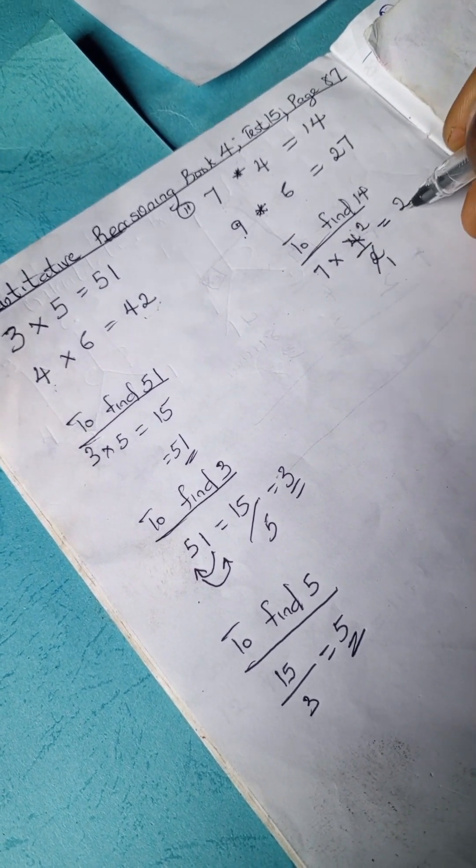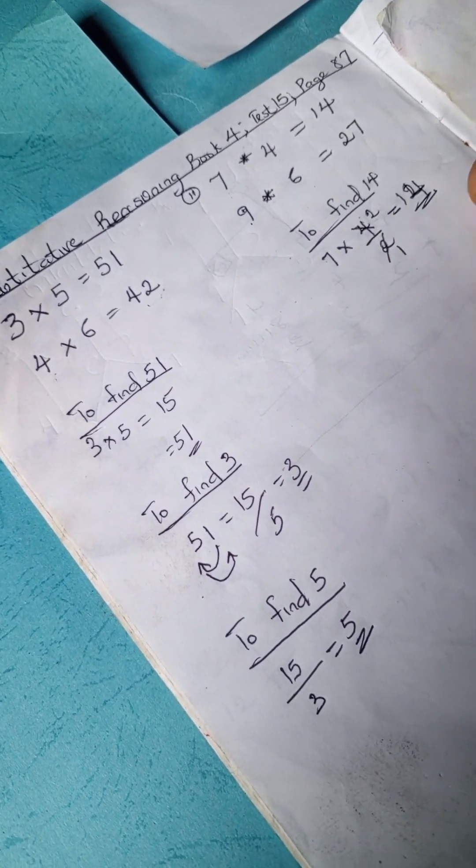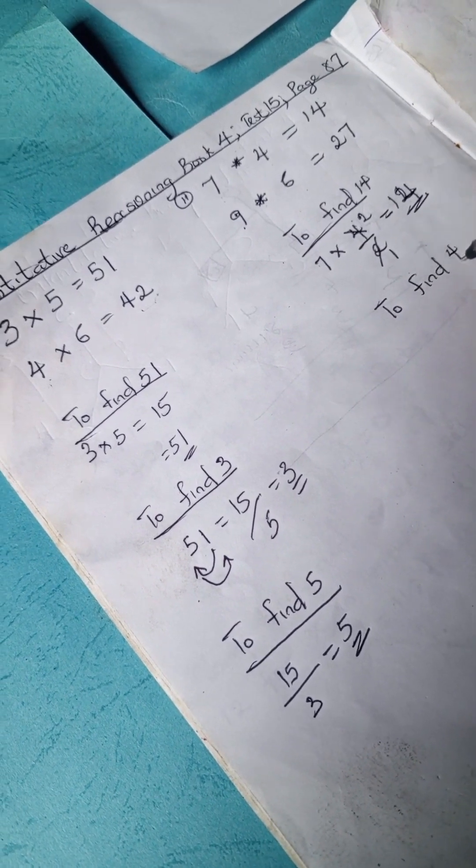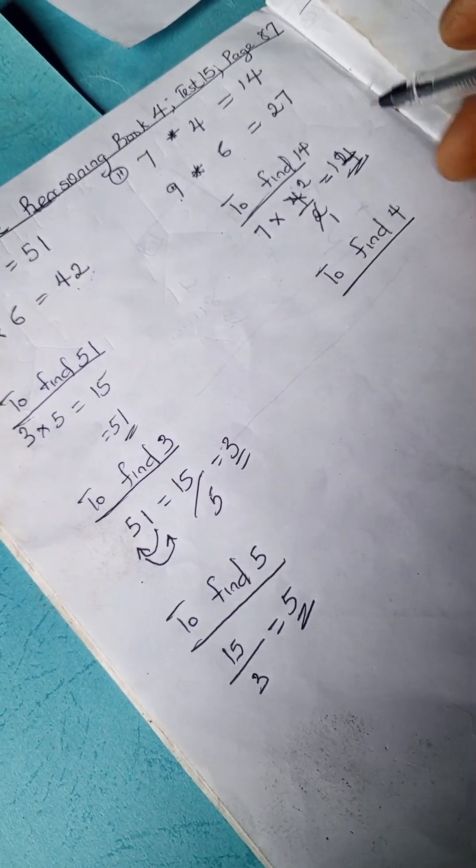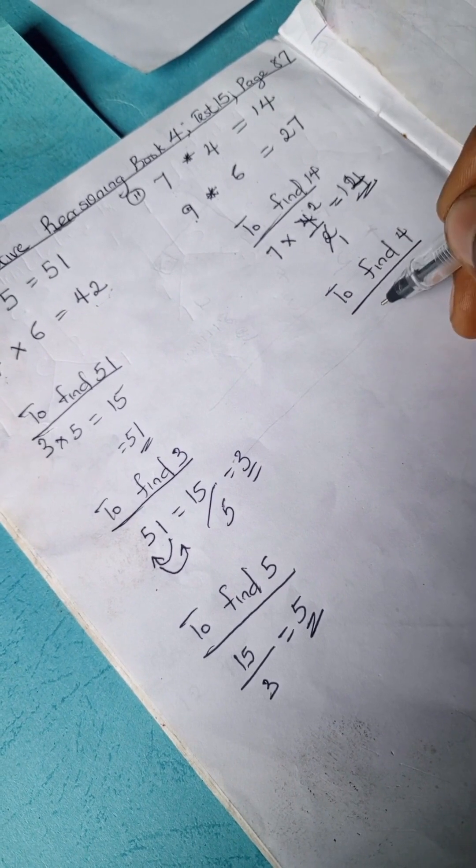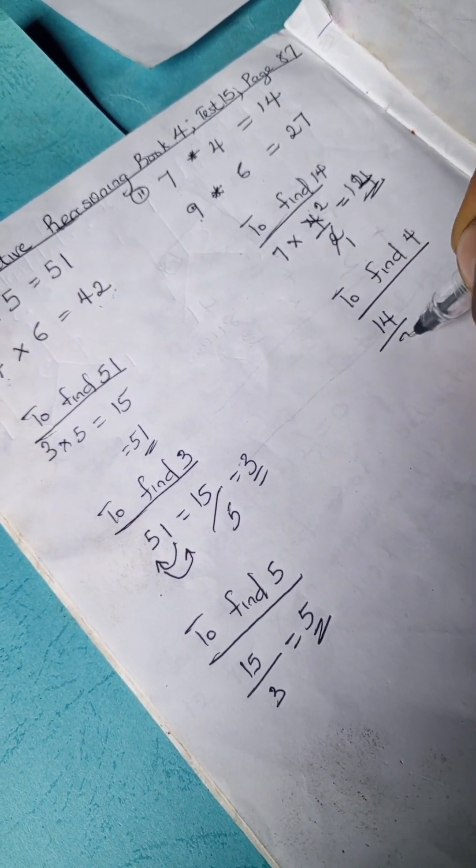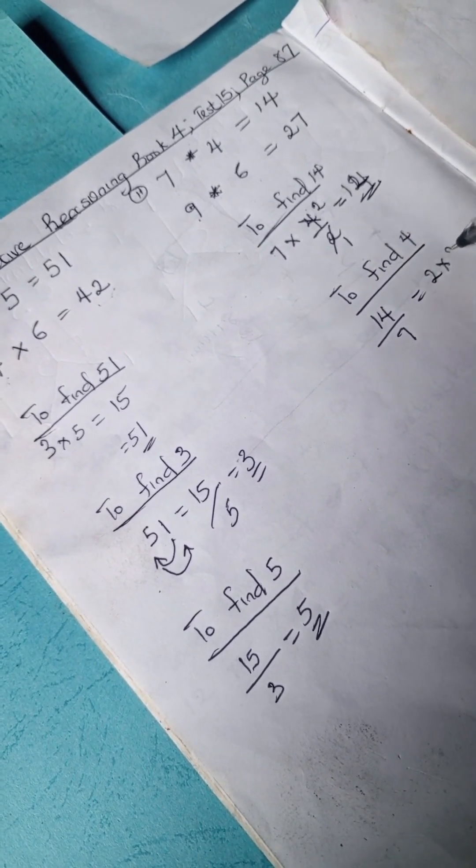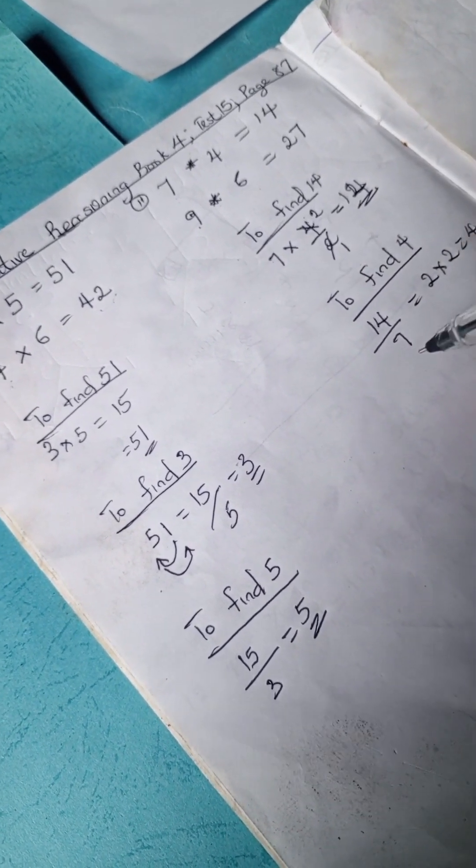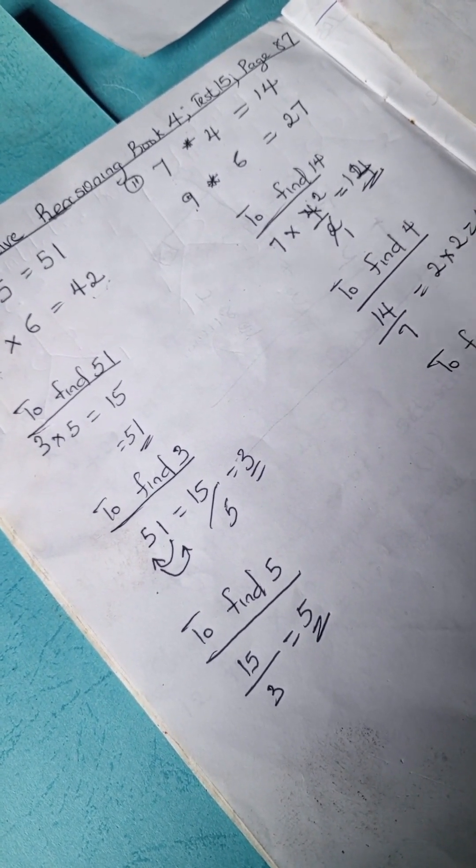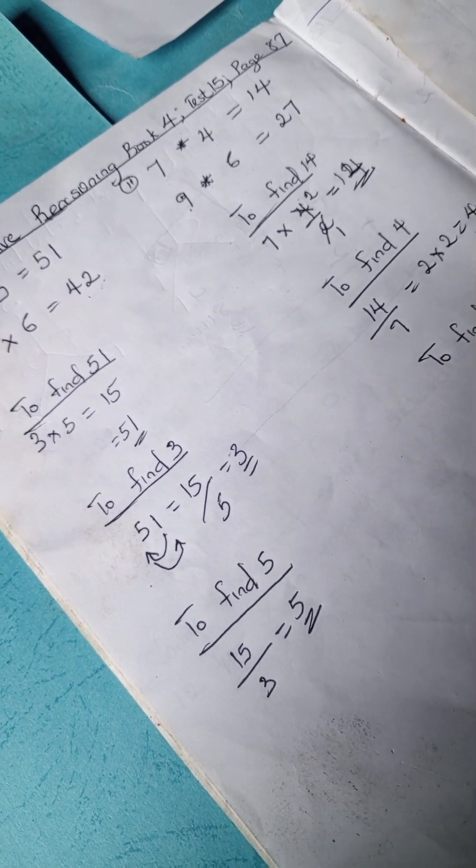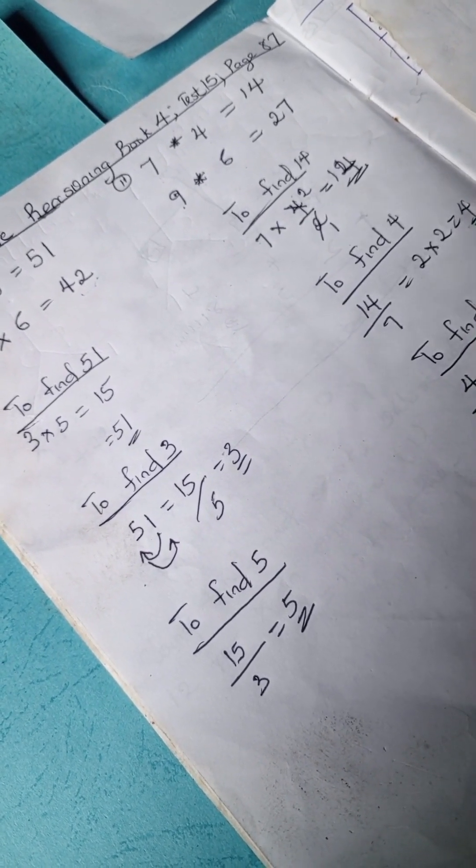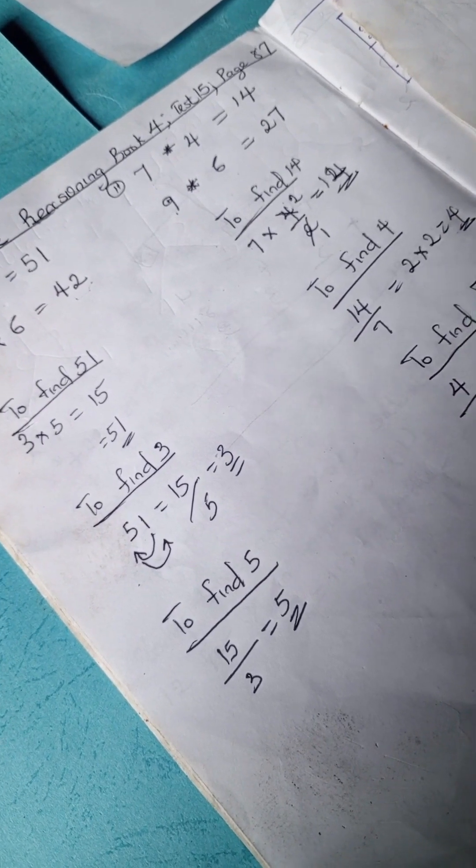So to find 4, you simply divide 14 divided by 7 is 2, and remember there is a magical 2 somewhere, so we have 2 times 2 is 4. To find the next number which is 7, simply have 4 divided by 2 is 2, hence 14 divided by 2 is 7.